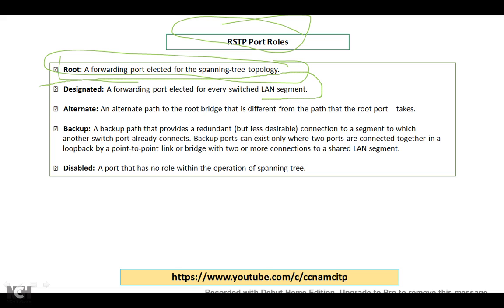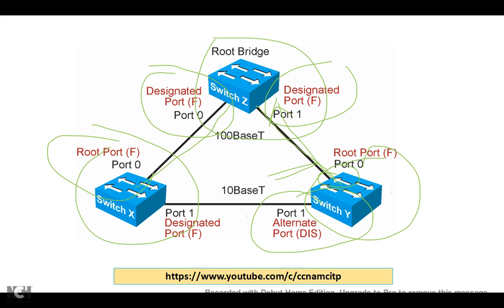Next is the designated port — a forwarding port elected for every switch LAN segment. If we have a LAN segment, there will be one designated port. The alternate port provides an alternate path to the bridge that is different from the path the root port takes. Data from the switch can reach the root bridge via this alternate path, but it costs more, so it is the alternate port.